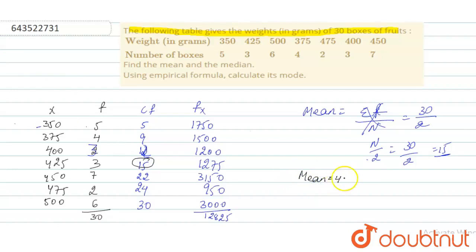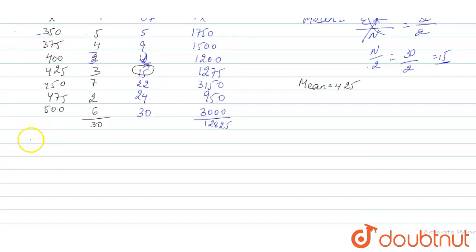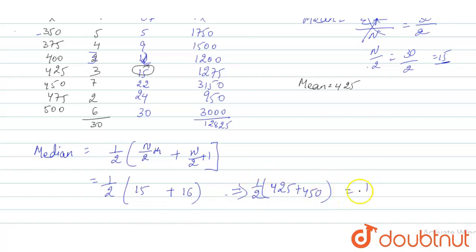Now we'll find out the median. Median equals to 1/2 times (n/2 plus n/2 plus 1). That will result to 1/2 into (30/2 is 15 plus 16), so 15 and 16. The 15th term is 425 plus 450 into 1/2, that will result to 1/2 into 675, which is 437.5. So the median equals to 437.50.